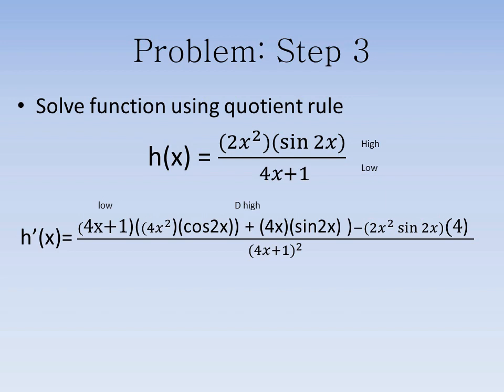We will then subtract the numerator, 2x squared times sine 2x, multiplied by the derivative of the denominator, which is 4. The next step is to divide our derivative by the denominator squared.